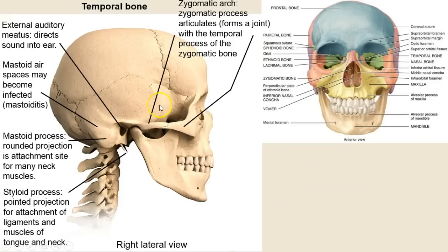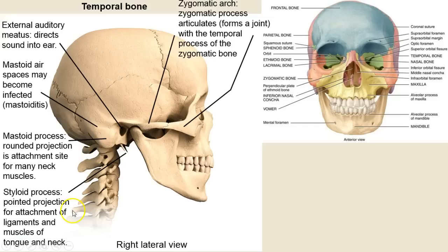The temporal bone — we looked at that; here it is outlined by the squamous suture and the lambdoid suture. There's the mastoid process — many neck muscles pull right off of there. The styloid process is a little pointed structure; that's why when you give someone a neck massage you have to be careful because that little pointed styloid can snap off.